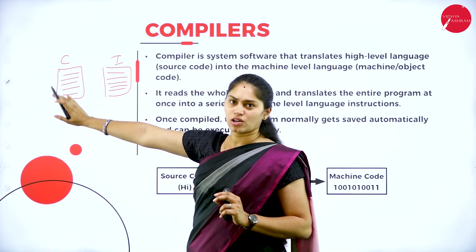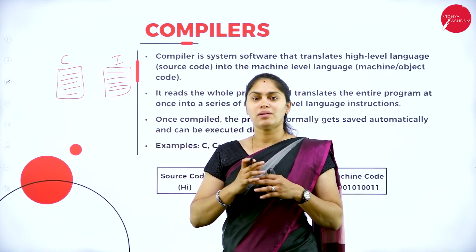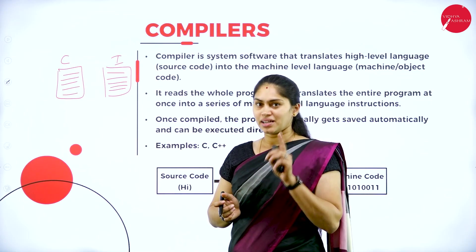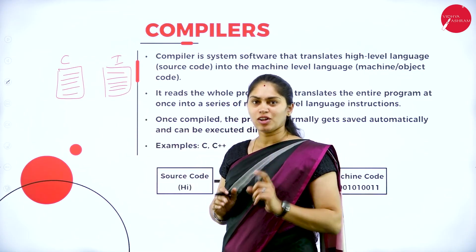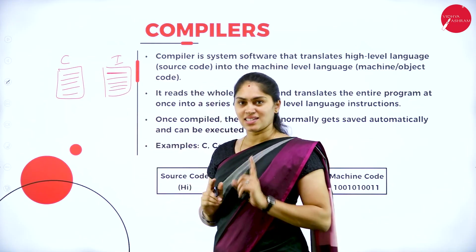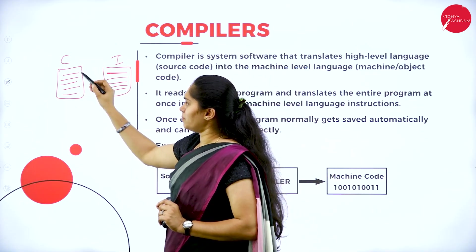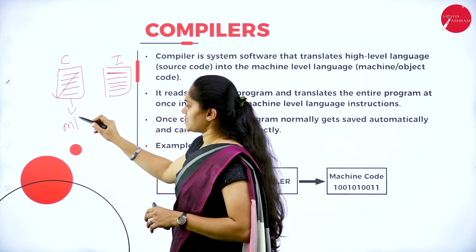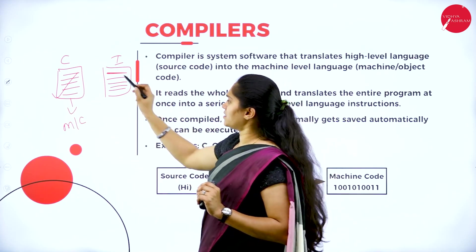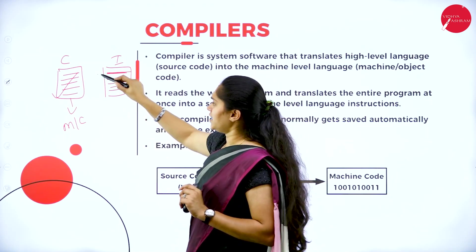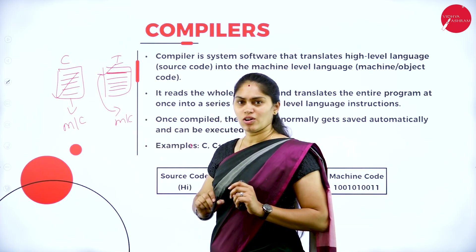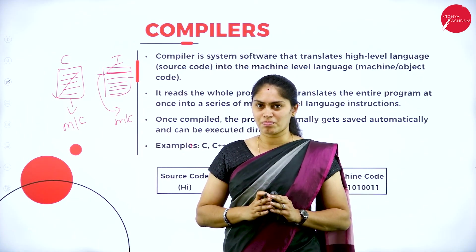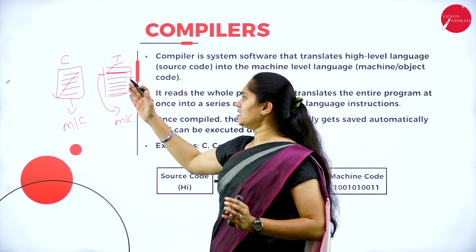For example, if we have five lines, the compiler reads all five lines completely, then converts all five lines into machine code. But in the case of the interpreter, it reads a single line at a time. If there is no error, that first line is converted into machine code. Then it moves to the second line, third line, until it reaches the end of the program. That is the key difference between compiler and interpreter.